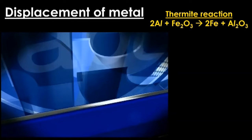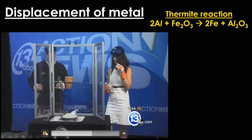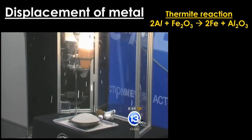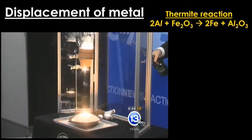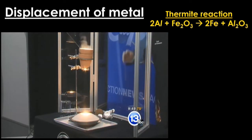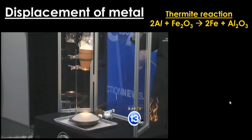Another example is displacement. Here's a video of the thermite reaction — a reaction between aluminum and iron(III) oxide — in which iron is produced. You can see liquid iron dropping into the sand, at temperatures in excess of four to five thousand degrees Fahrenheit. This illustrates displacement, where aluminum displaces iron from its oxide.